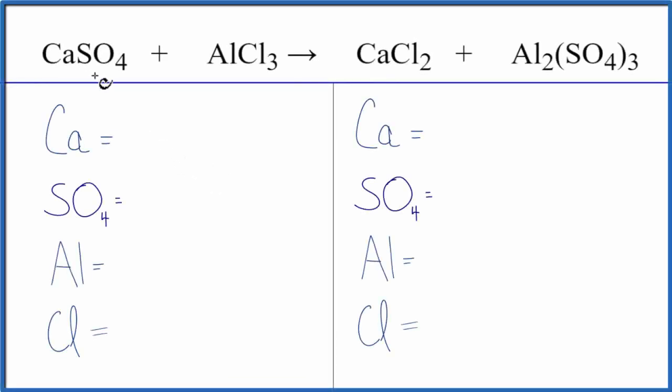To write the balanced equation for CaSO4 plus AlCl3, we'll count the atoms up on each side of the equation. We have one calcium, and then we're going to use a little trick here that'll make it a lot easier to balance.